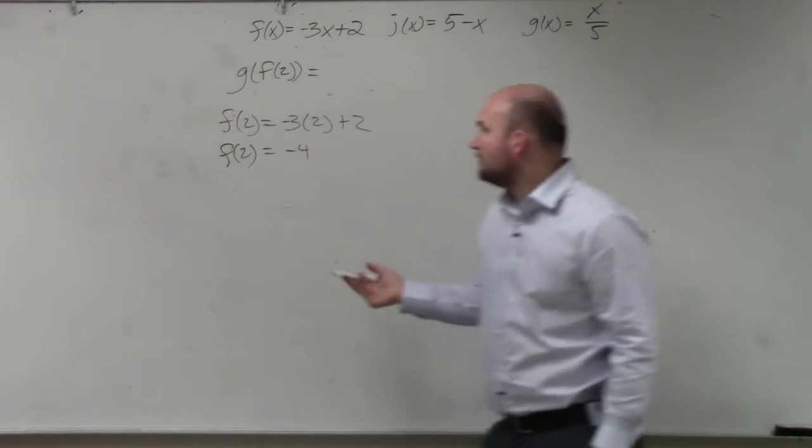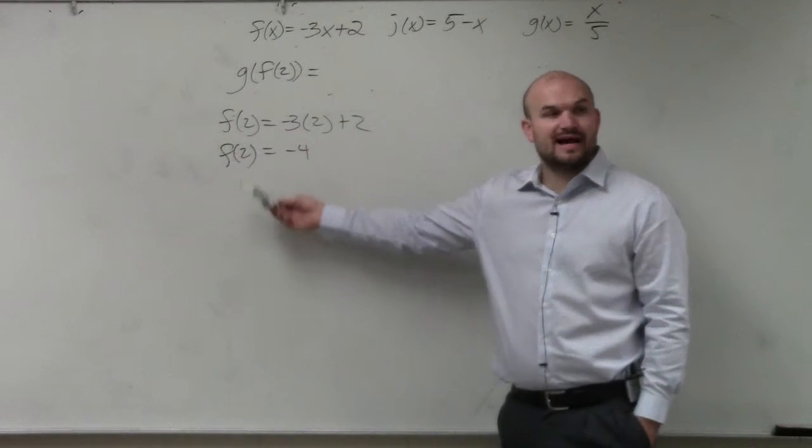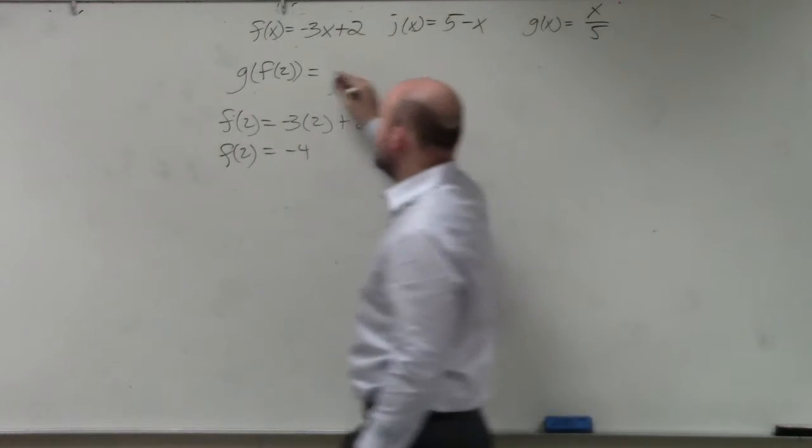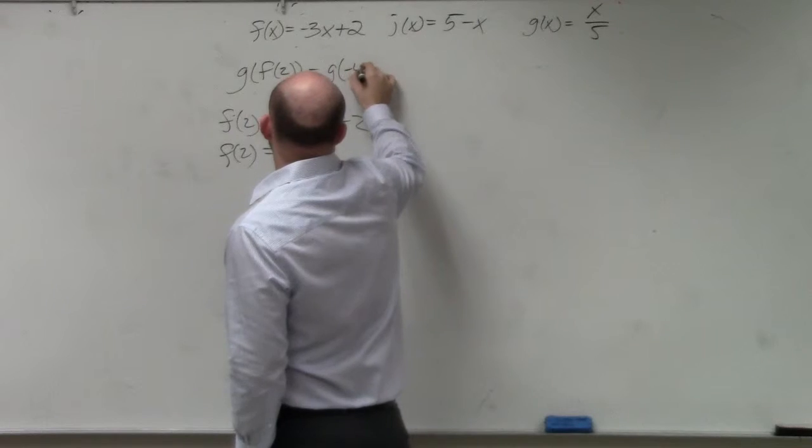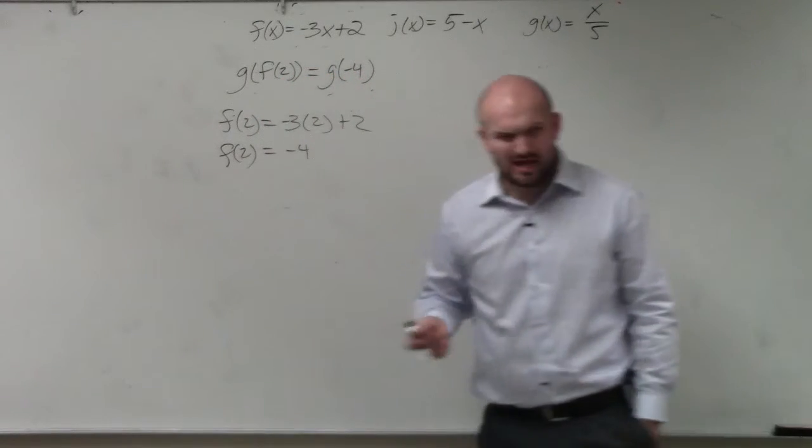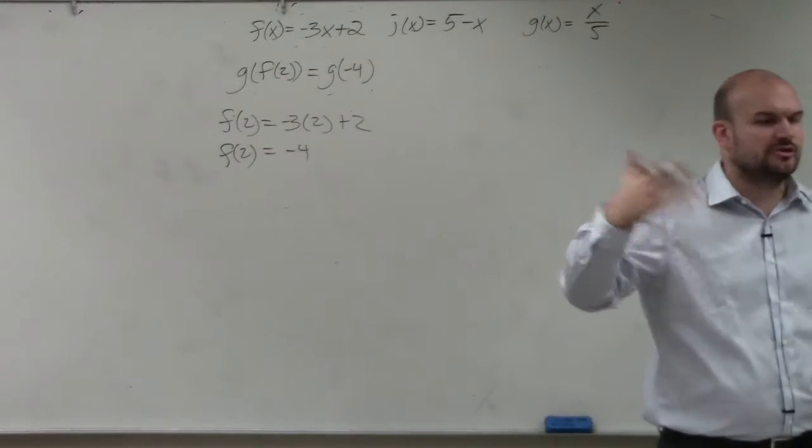So the main important thing, guys, I want you to understand that I can replace f of 2 with negative 4. So in reality, instead of doing g of f of 2, I could really do g of negative 4, which would probably make more sense, right? That's something you guys are a little bit more familiar with.